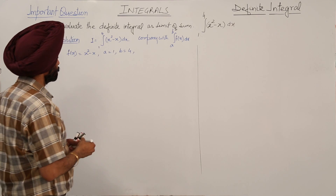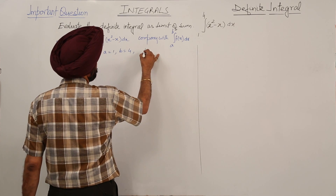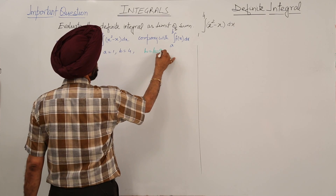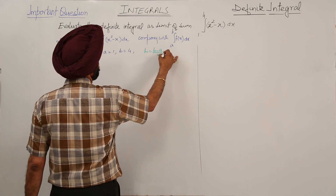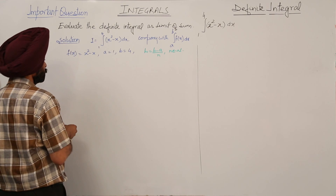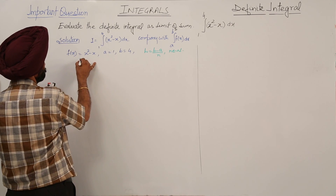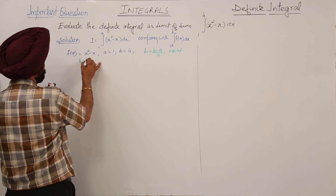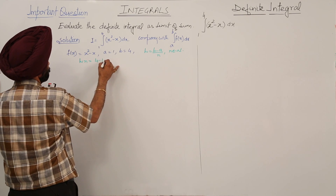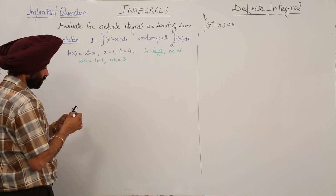The next step: h is equal to (b - a)/n, where n belongs to the natural numbers. So nh = 4 - 1, which gives nh = 3.